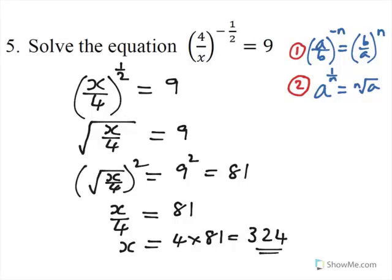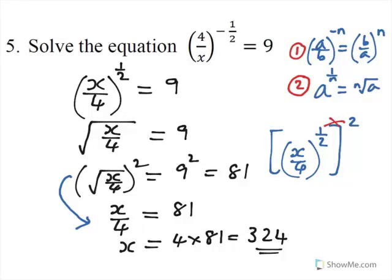There are other ways of doing this question, but this is the way I've decided to do it. Now, just to point out that if you're troubled about going from there to there, then think of it as x over 4 to the power of 1 half, for the square root, raised to the power of 2. And if you multiply these two together, you get 1. Hence, you get the x over 4 here.